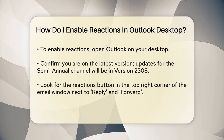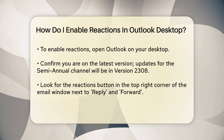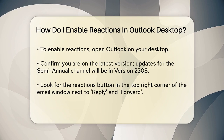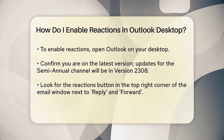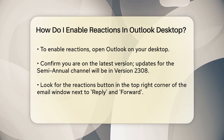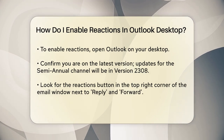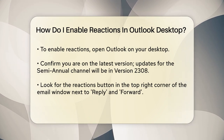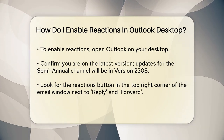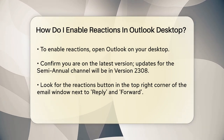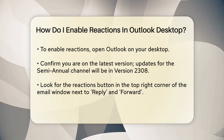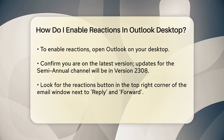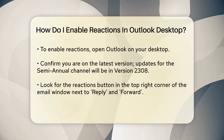Here's what you need to do. Open Outlook on your desktop and make sure you're using the latest version. If you're on the semi-annual channel, you'll get the update in version 2308. When you receive an email, look for the reactions button in the top right-hand corner of the message window — it's right next to the reply and forward buttons.